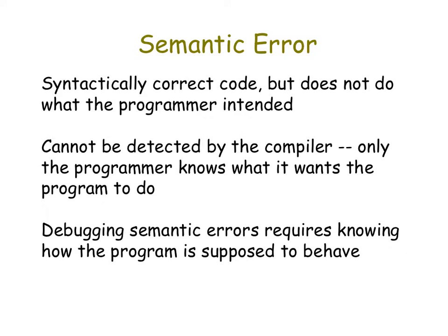A semantic error is when you follow all the syntax rules, but the program doesn't do what the programmer intended it to do. These are usually trickier because they don't pop up as errors. Everything might look fine to you, but the computer translates it differently or can't translate it at all. Remember, computers follow exactly what you tell them to do — they have no room for interpretation and can't fill in the gaps you leave in the code.